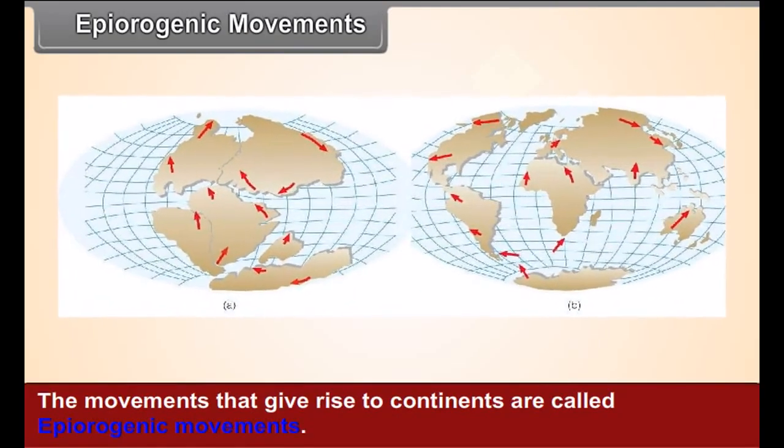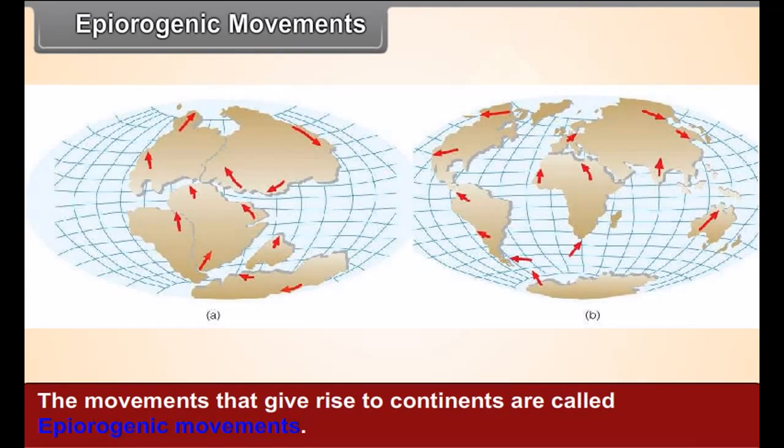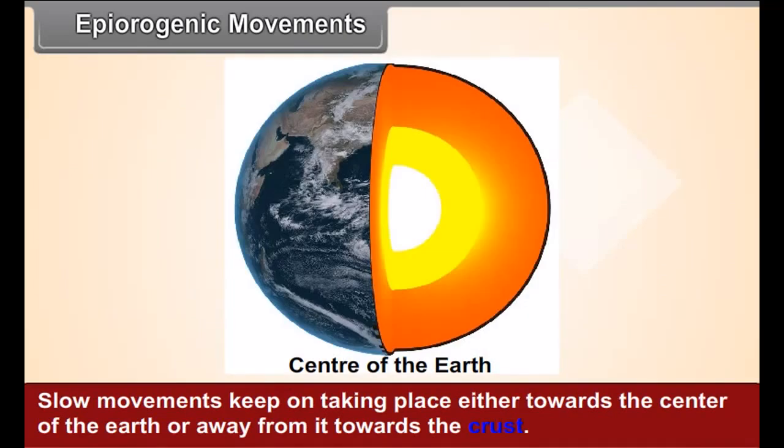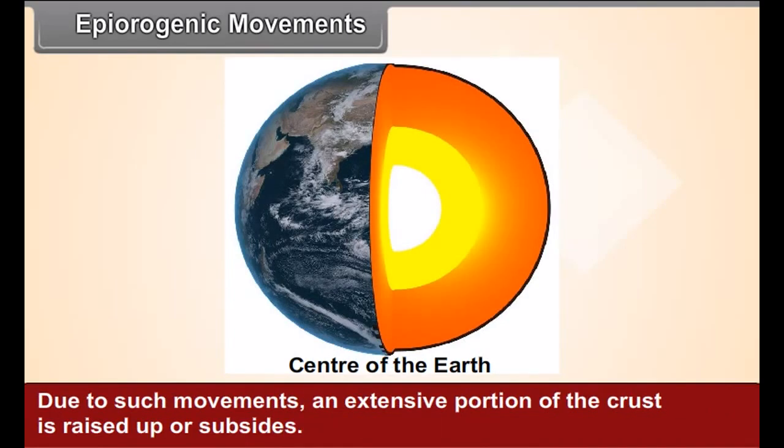Epeirogenic Movements. The movements that give rise to the continents are called epeirogenic movements. Slow movements keep on taking place either towards the center of the earth or away from it towards the crust. Due to such movements, an extensive portion of the crust is raised up or subsides.